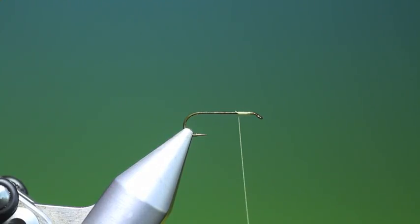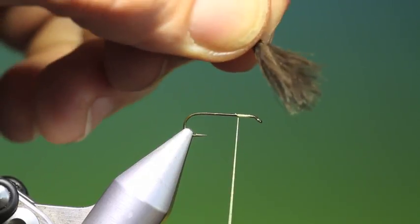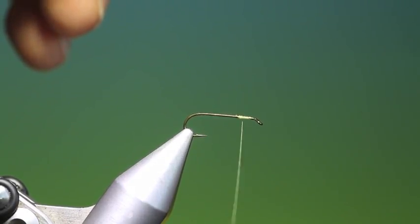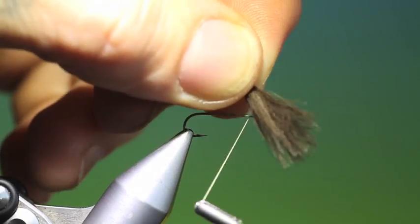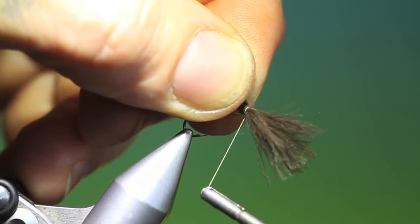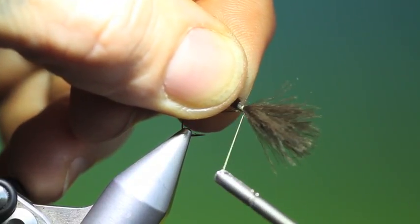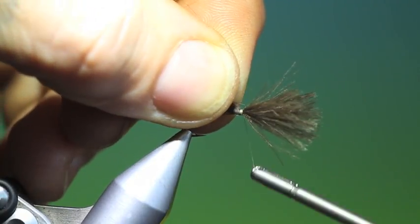Put a bit of tying thread on at the front. We need three or four CDC hackles, beige or brown. We'll just tie these in.